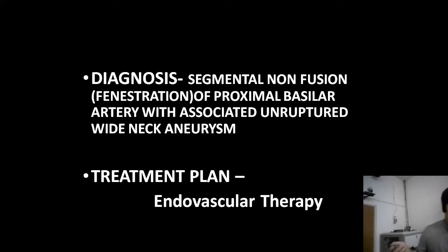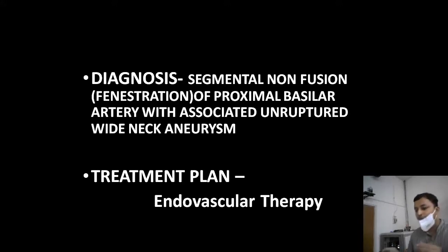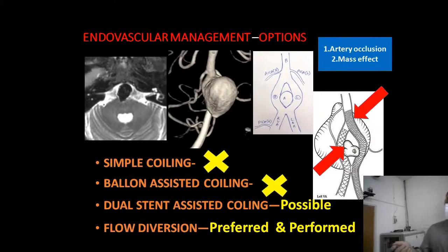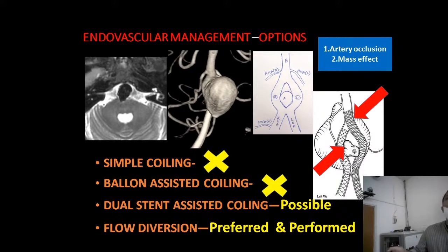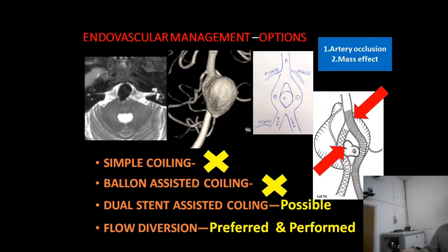Regarding treatment options — surgery and endovascular. Surgery carries significant risk given the critical anterior brainstem location, so endovascular treatment is preferred. Among endovascular options, simple coiling and balloon-assisted coiling are not applicable here because the aneurysm is very large (17 by 19 mm), compressing the brainstem, and both limbs of the fenestration are involved — coiling would occlude both limbs and potentially worsen mass effect. Therefore, simple and balloon-assisted coiling are ruled out.